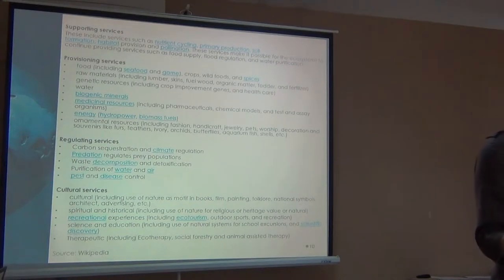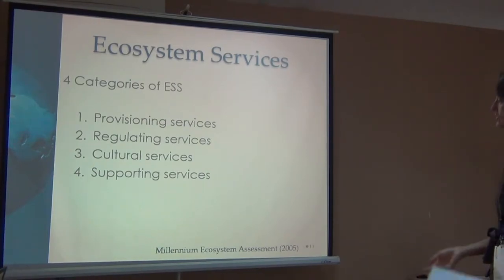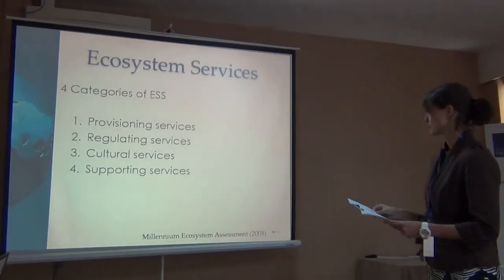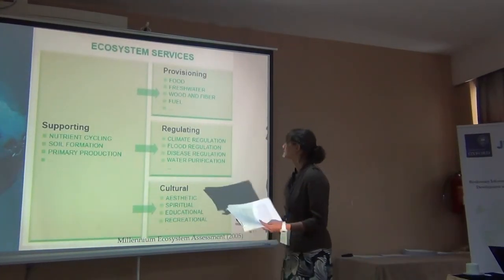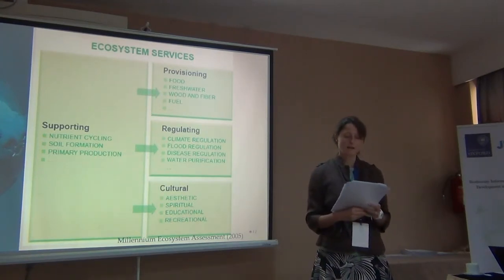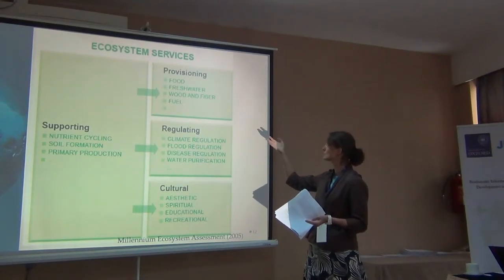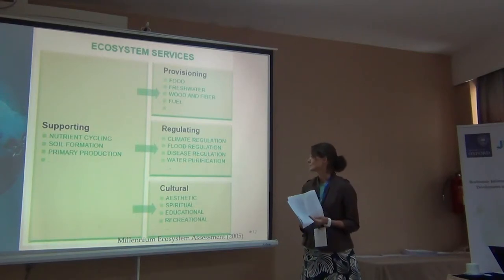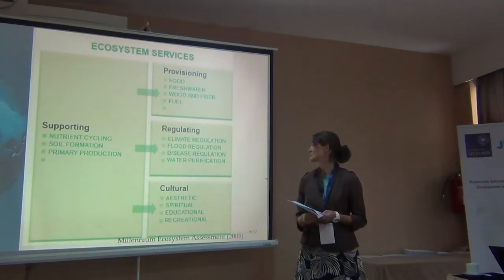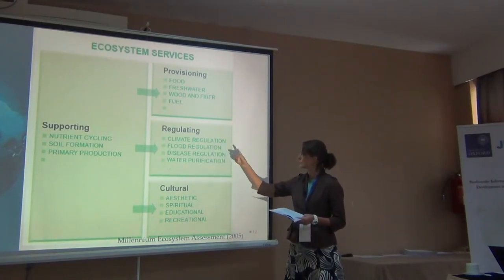These ecosystem services are often classified into four categories: provisioning services, regulating services, cultural services, and supporting services. The provisioning services usually make the most sense to people — those goods and products you derive from the natural forest, from the ocean. Firewood from the forest that might provide fuel or fiber. Fresh water is a big provisioning ecosystem service. Some ecosystem services that people think of less often are the supporting, regulating, and cultural ones.